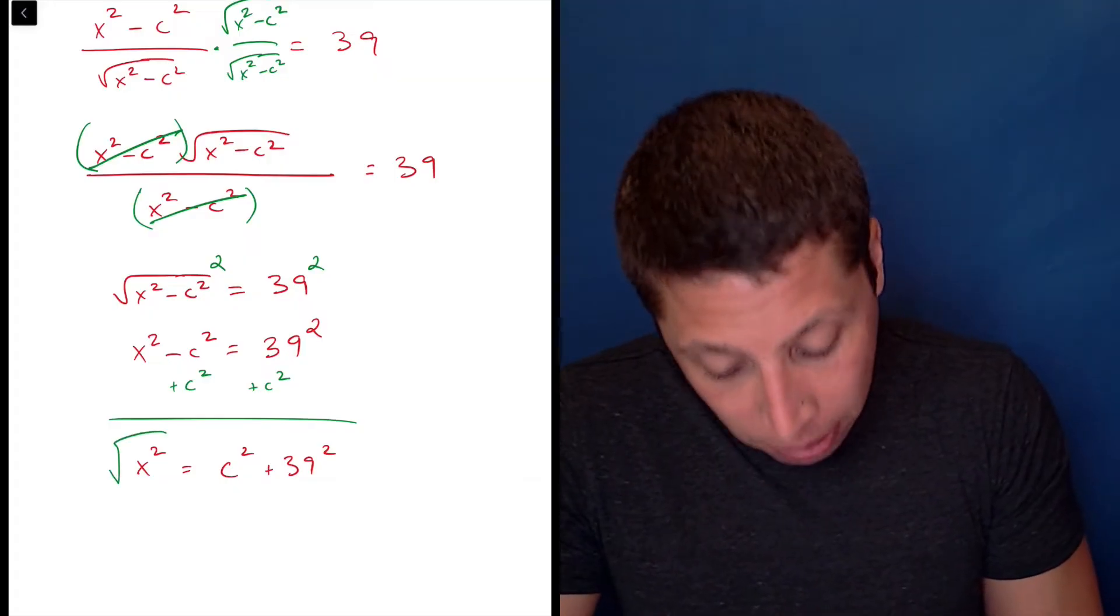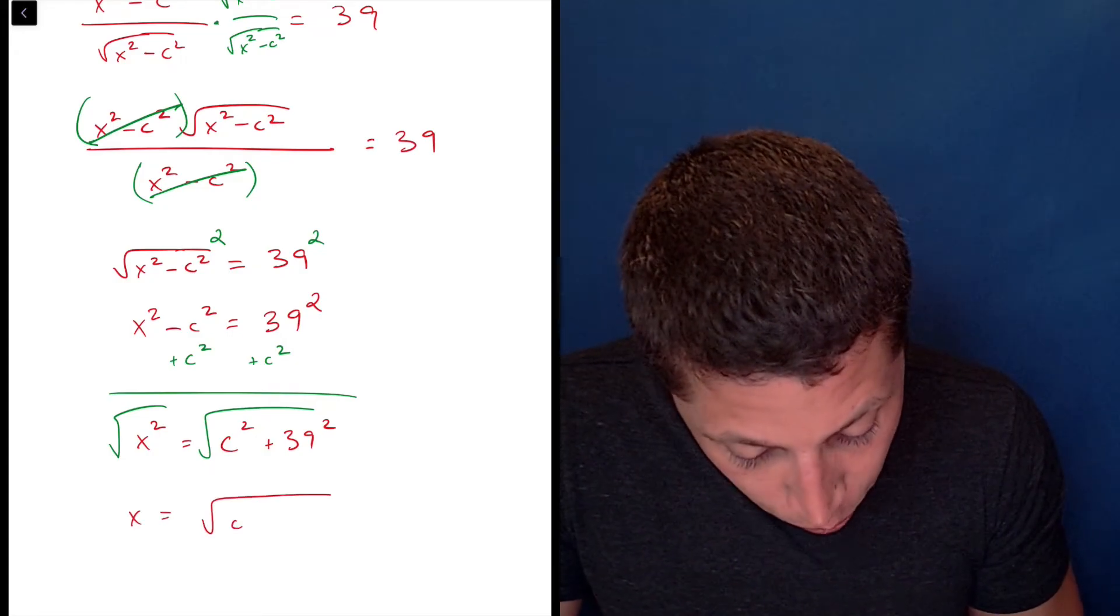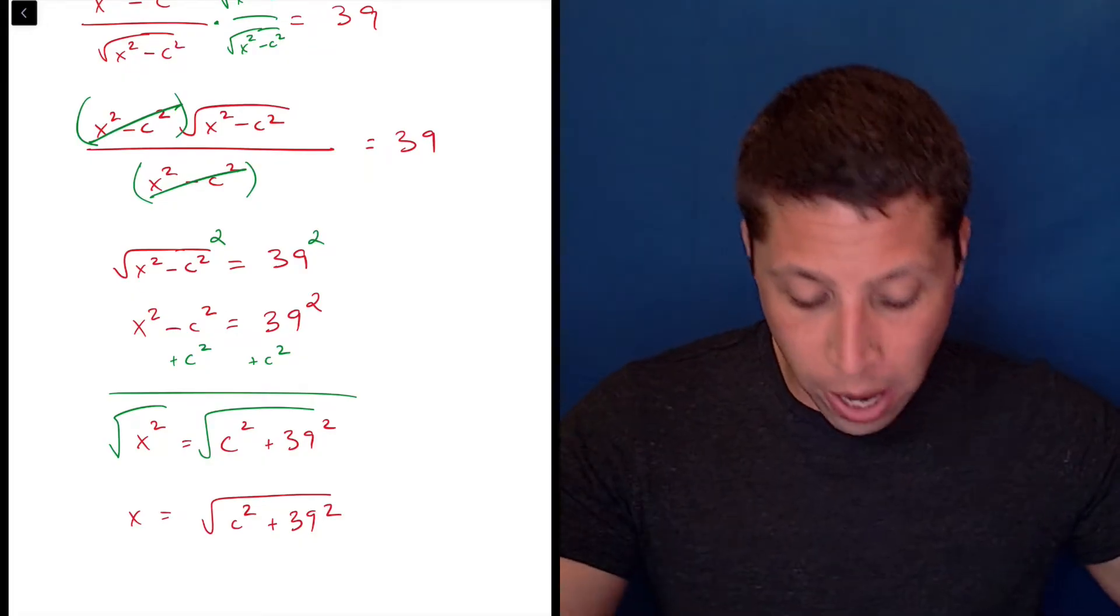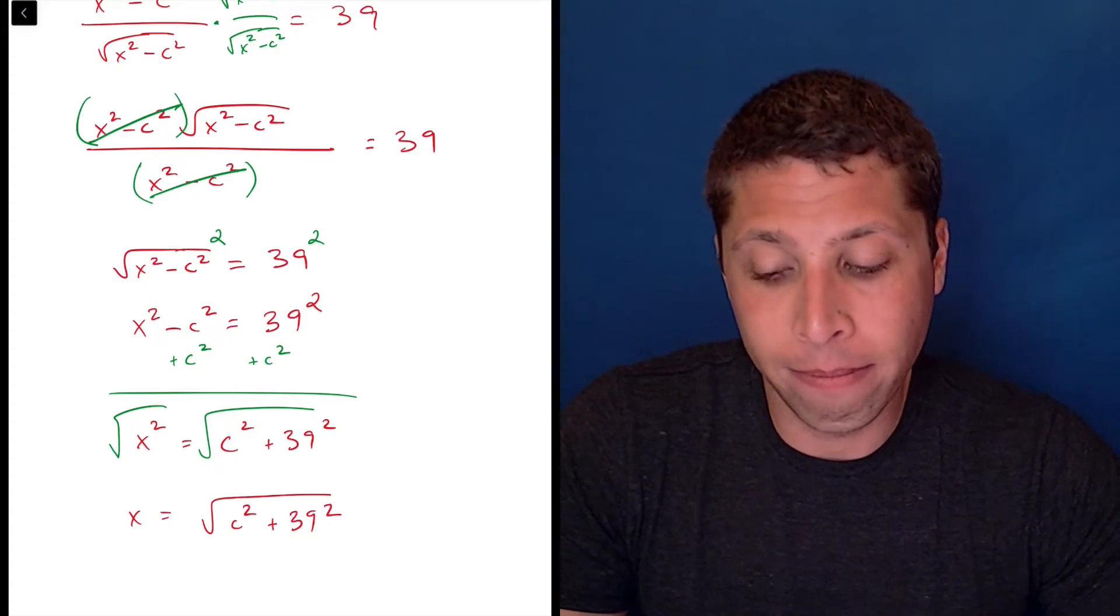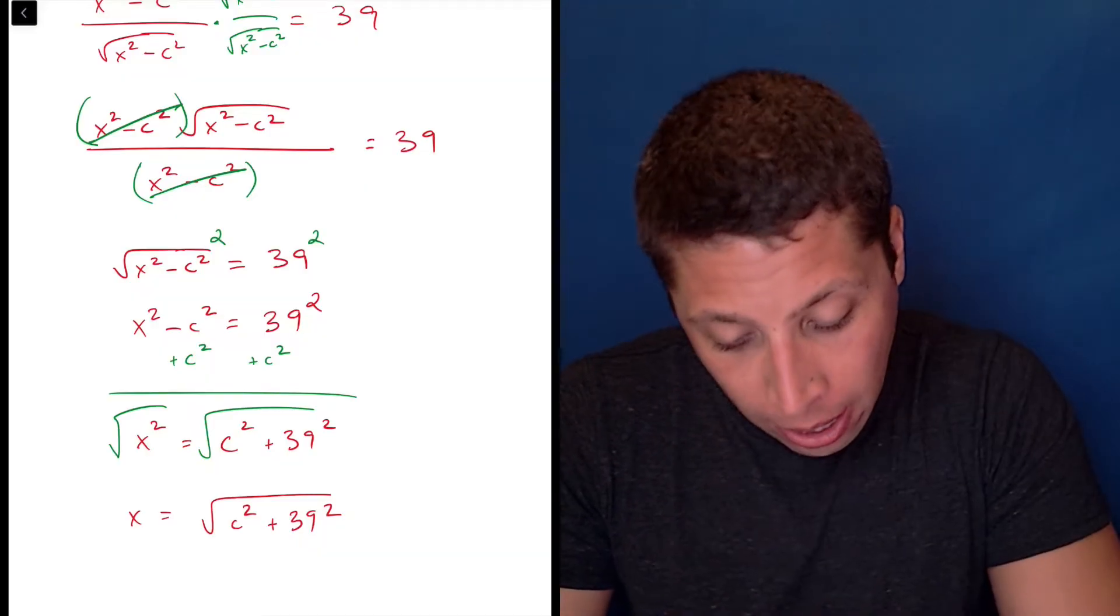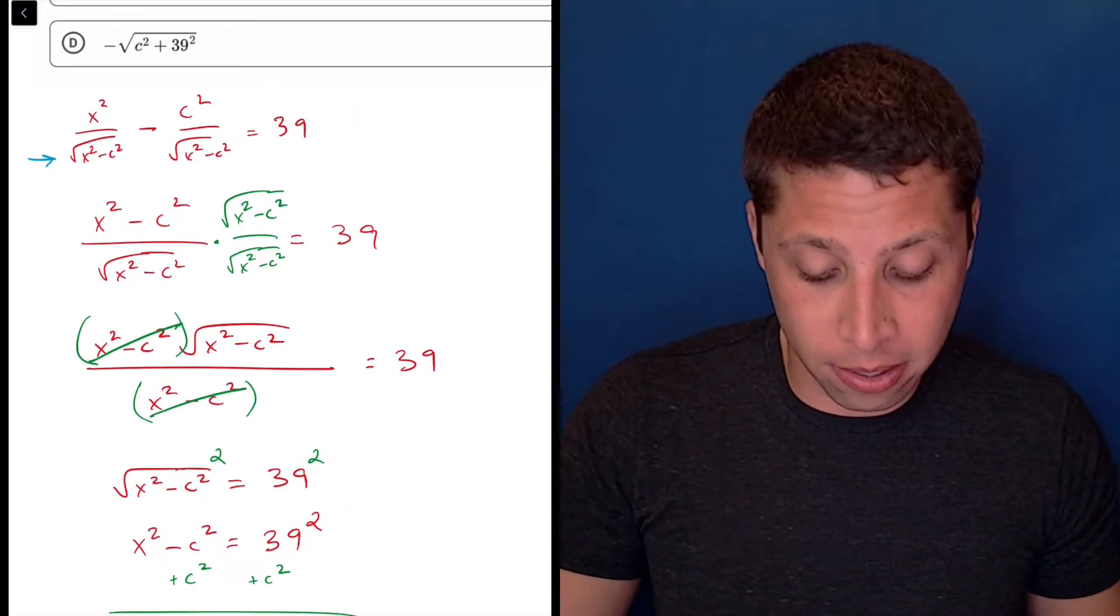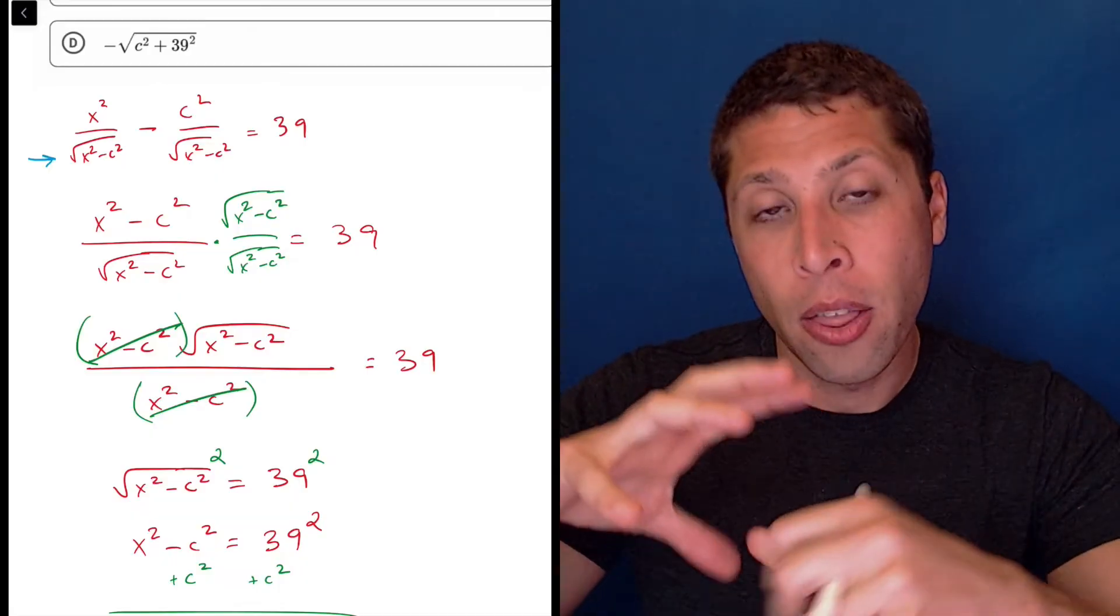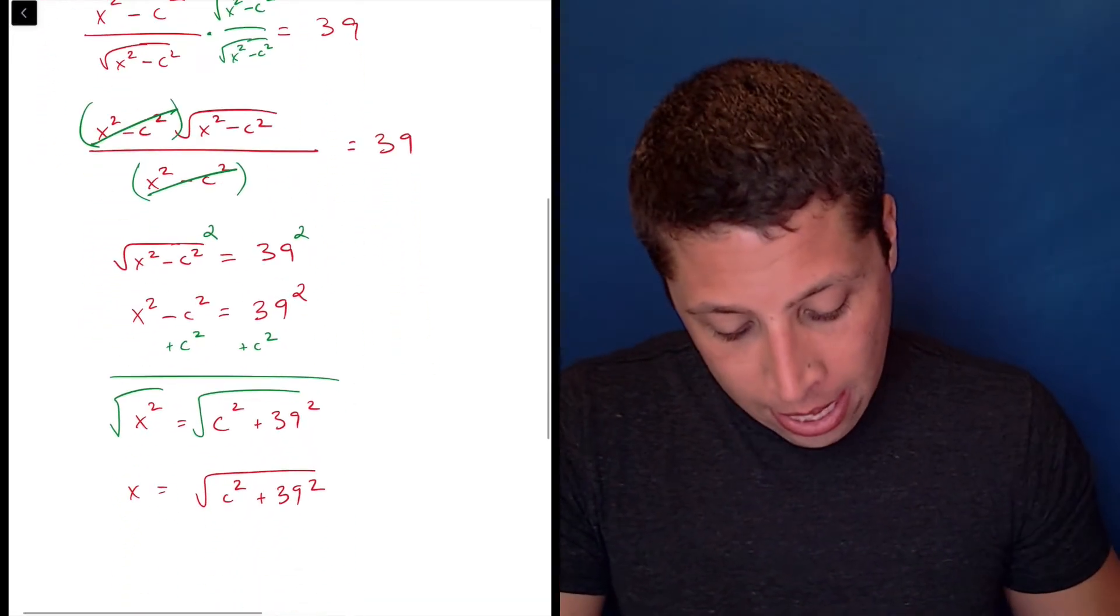And now to get x completely alone, I need to get rid of the square. And so I take the square root of both sides. And when I do that, I get that x is equal to the square root of c squared plus 39 squared. And some of you are going to be tempted to apply that square root to the two squares and cancel them out. But it doesn't work like that because there's this plus that's in between them. So we can't just, the radical can't work with those two numbers. It has to work with it as a unit. It's kind of why before, at this step, even actually all the way back to the beginning, when we had a square root of x squared minus c squared, that does not reduce to just x minus c. Again, that minus there is kind of preventing the radical from interacting with the exponents. It just doesn't work for order of operations reasons.